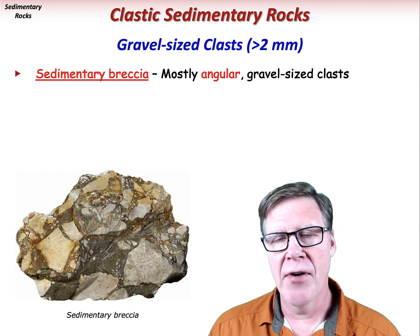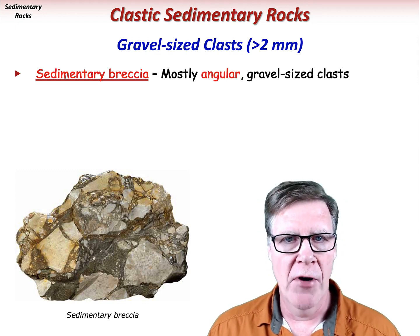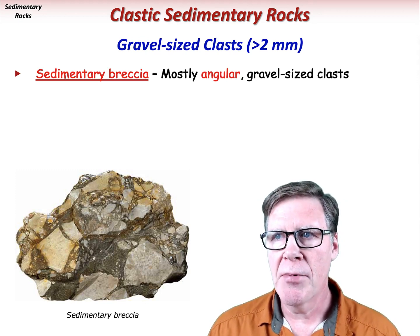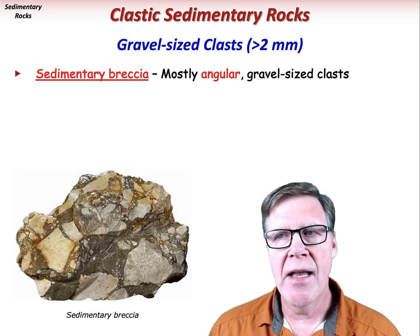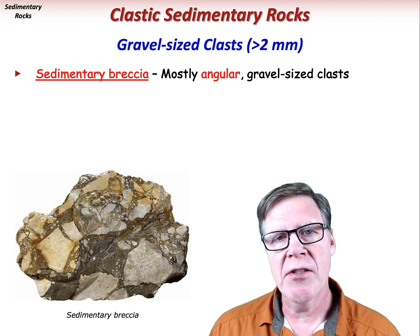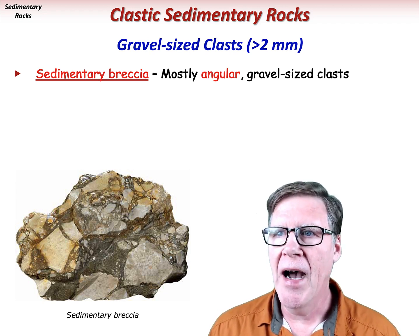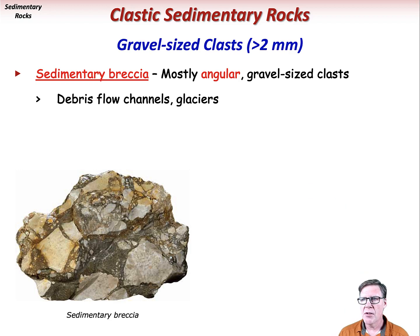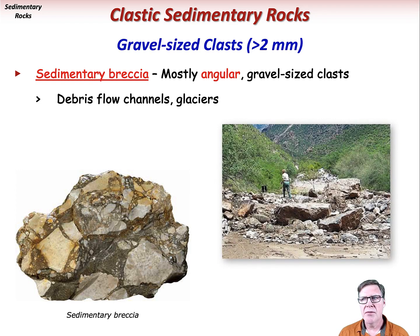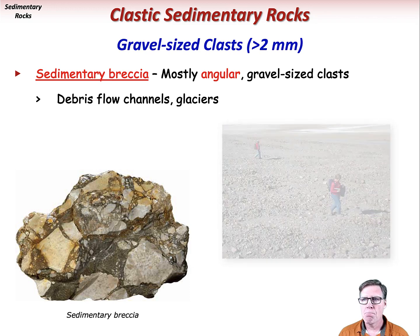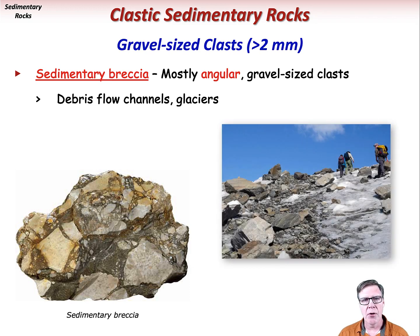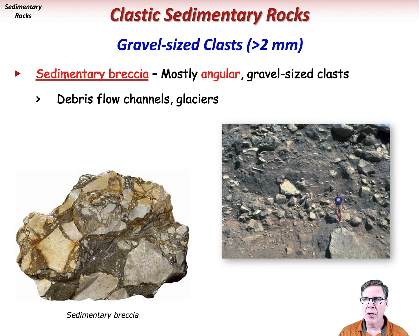If most of the clasts are angular, then it's a sedimentary breccia. These are typically poorly sorted rocks that, together with their angular clasts, can be interpreted as having relatively short transportation distances in a high-energy stream environment — like a debris flow down a mountain stream or across an alluvial fan. Glacier ice can also transport large clasts with little or no rounding effects, and sedimentary breccia commonly composes glacial till and moraine.